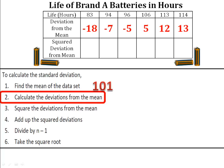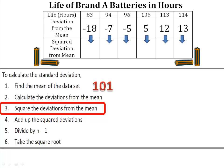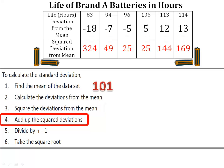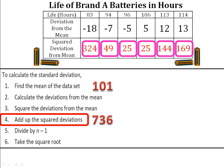Now we're going to do something else. We're going to take those deviations and we're going to square each number. When we square negative 18, we get 324. When we square negative 7, we get 49, and so on and so forth. Then, we'll take those numbers and we'll add them all up. We add the square deviations and we get a sum of 736. We're almost done.